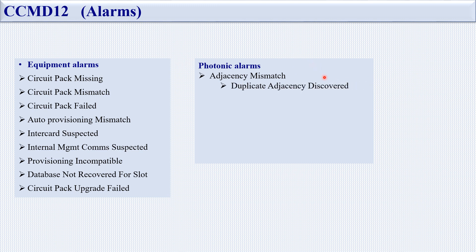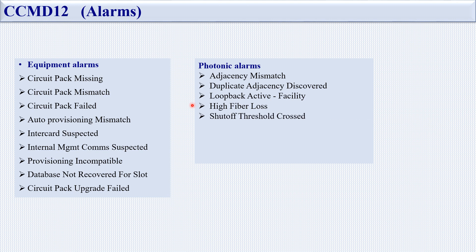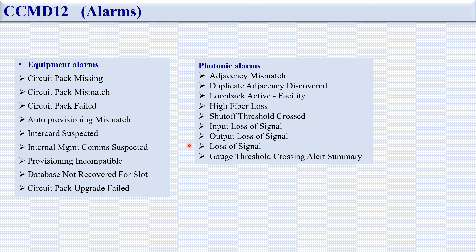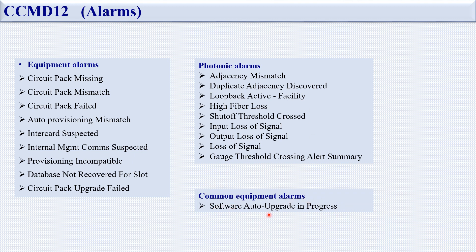Photonic alarms include: adjacency mismatch, duplicate adjacency discovered, loopback active, facility high optical loss, set of threshold crossing, input loss of signal, output loss of signal, loss of signal, and GAUS threshold crossing alert summary. Common equipment alarms include software auto-upgrading process. This covers all CCMD 12 alarms.